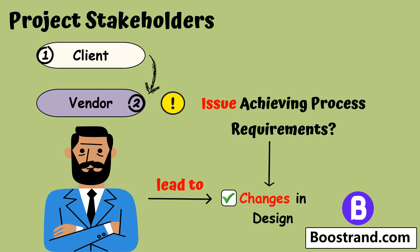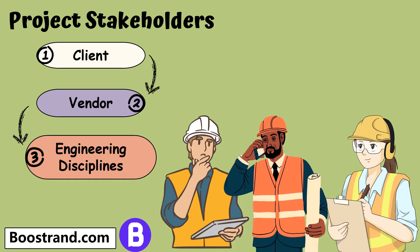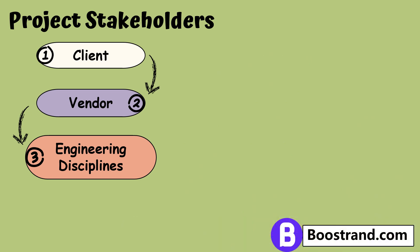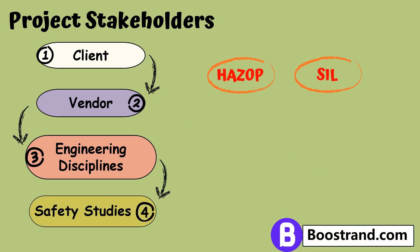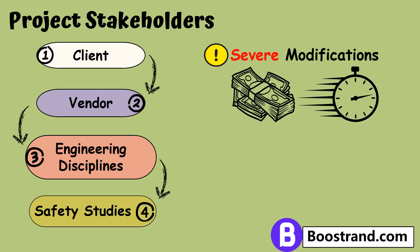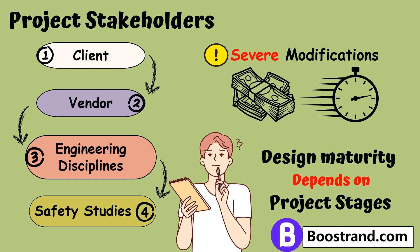This may lead to a modification of the design. Engineering issues related to piping or civil works may arise even within the engineering company, leading to looking for alternative solutions. Safety studies such as HAZOP or SIL may impose more requirements to ensure that the design has enough protection for the plant. Each phase represents a level of accuracy in the design, which is important to avoid severe modifications and their consequences related to cost and delay in delivery.